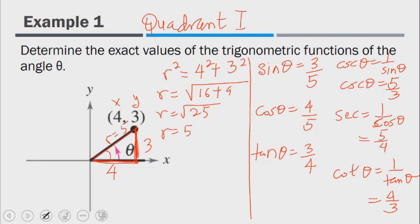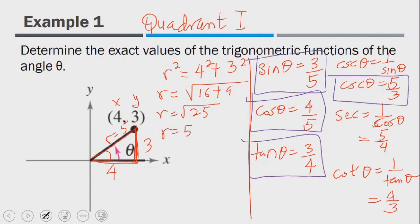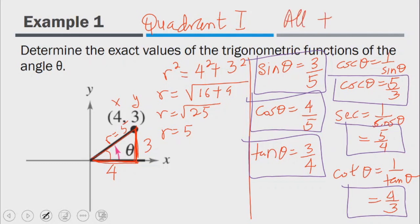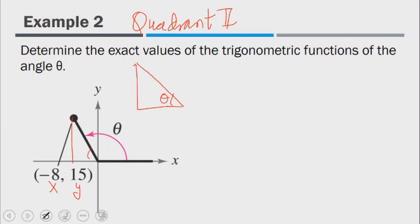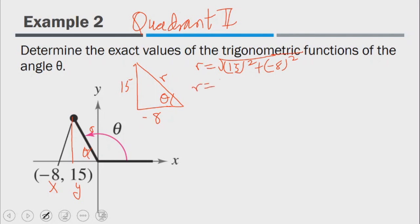These are the values for all six trigonometric functions for this question. Note that all trigonometric functions are positive in quadrant 1. For question number 2, we are dealing with the second quadrant. The y value is 15 and the x value is negative 8. Using the Pythagorean theorem, r equals the square root of 15 squared plus negative 8 squared, so r equals 17.